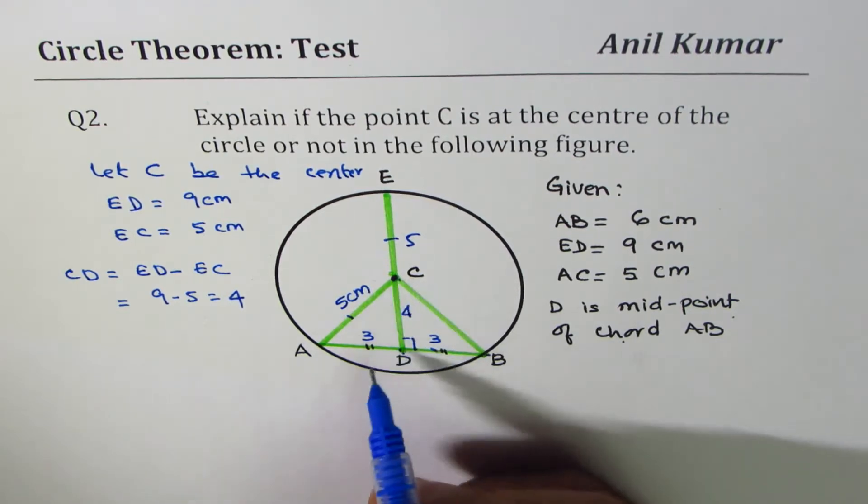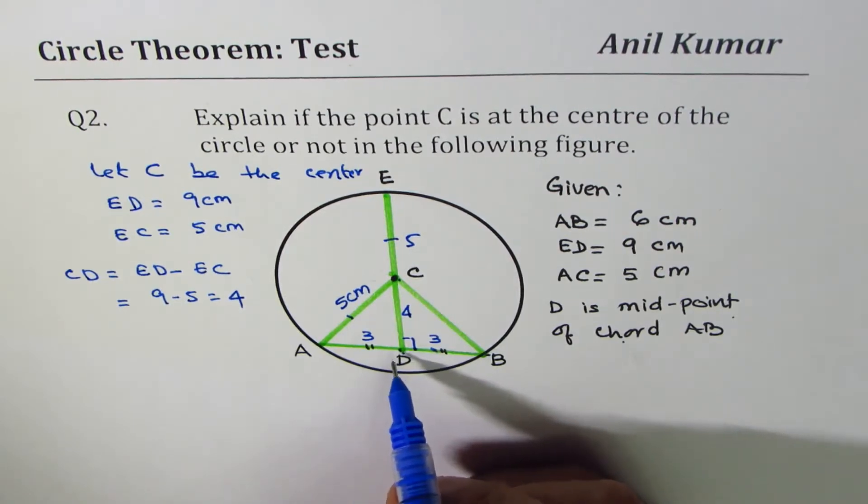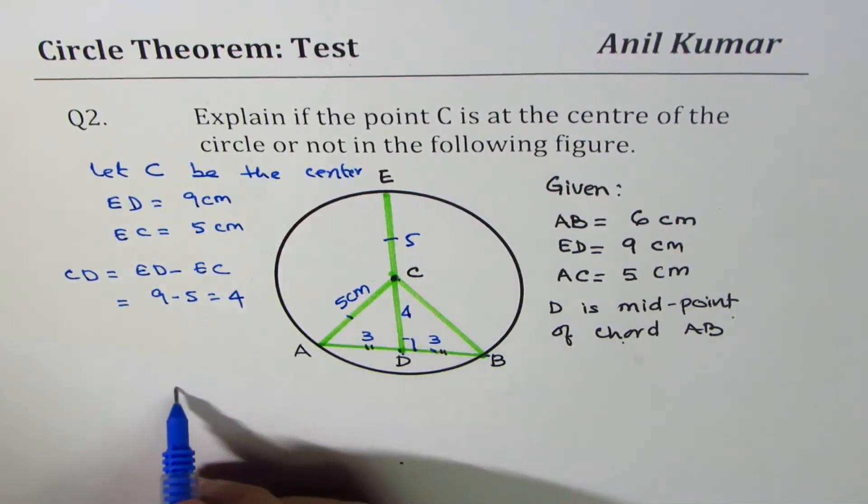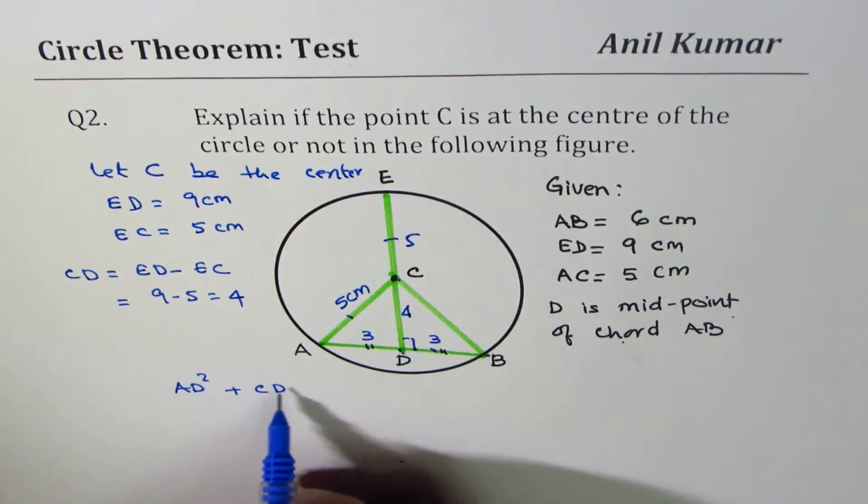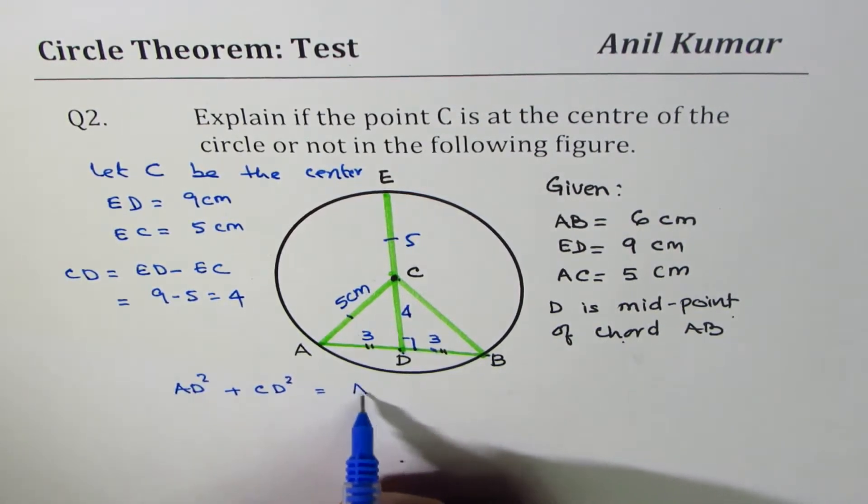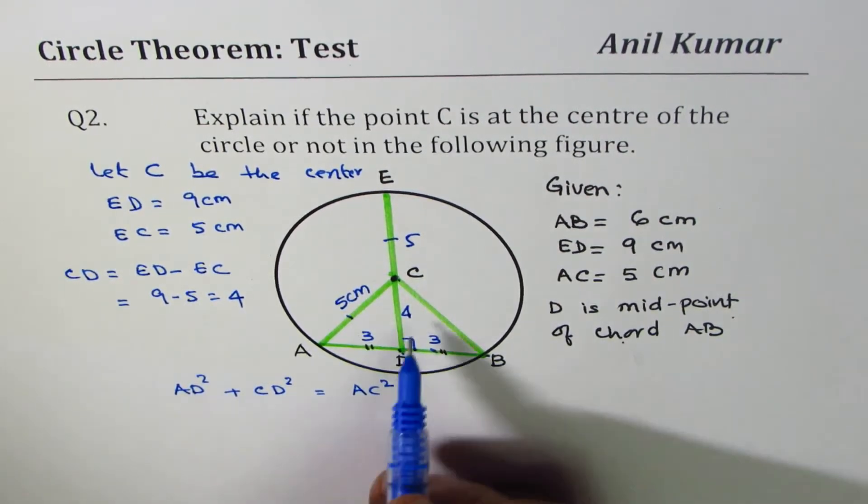So in that case, AD square plus CD square should be equal to AC square. If that is true, then C is the center. Else, it is not. So let's check.